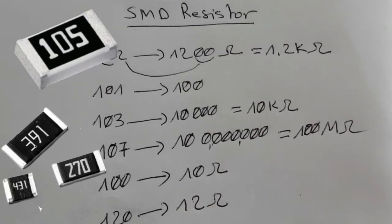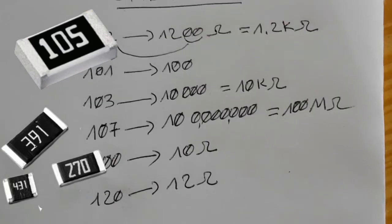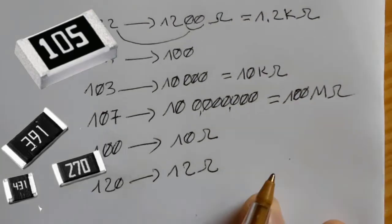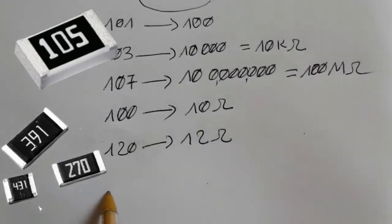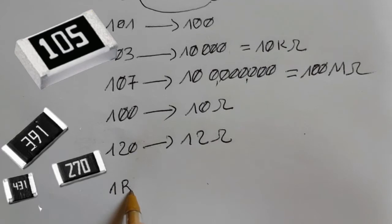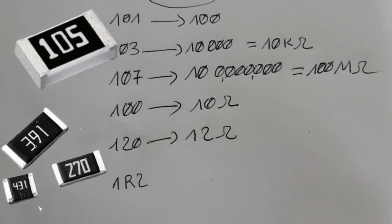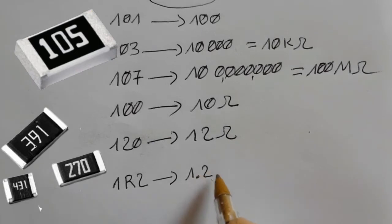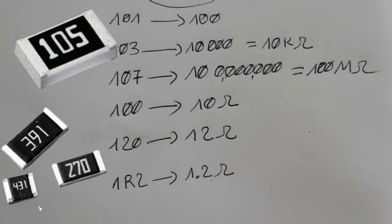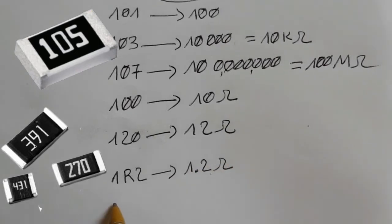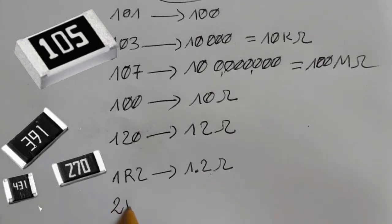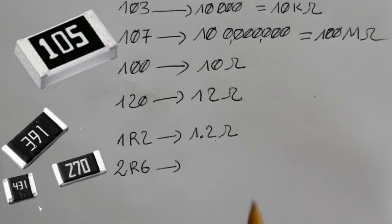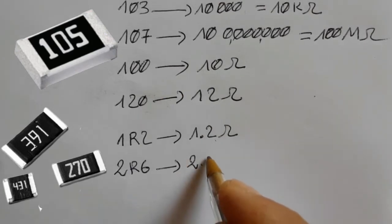For 120, this equals 12 ohms because the third digit is zero — when the third number is zero, you just take the first two numbers. For the R notation: 1R2 means 1.2 ohms, where R represents the decimal point.